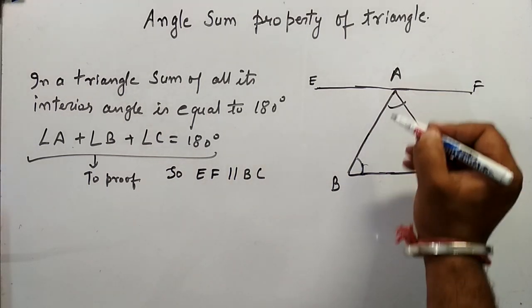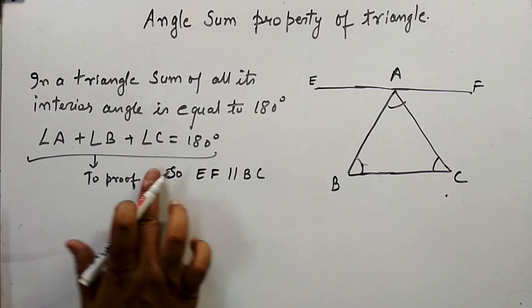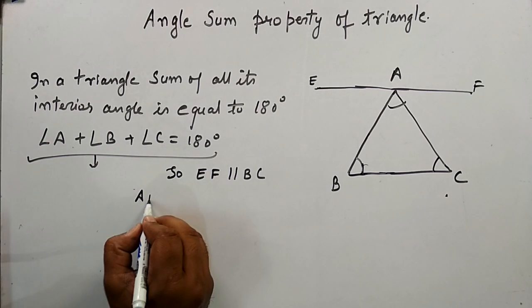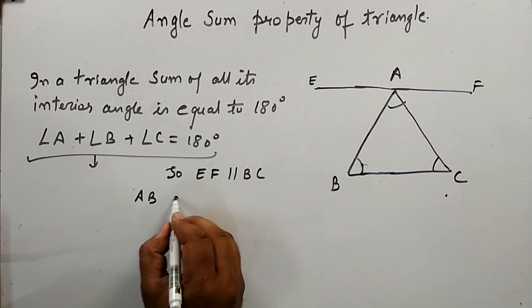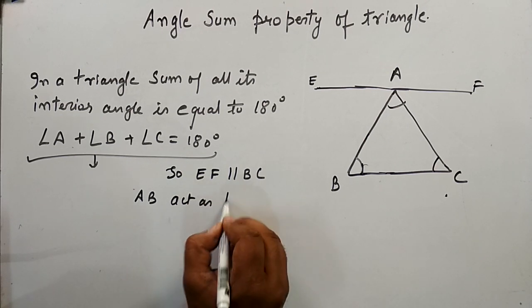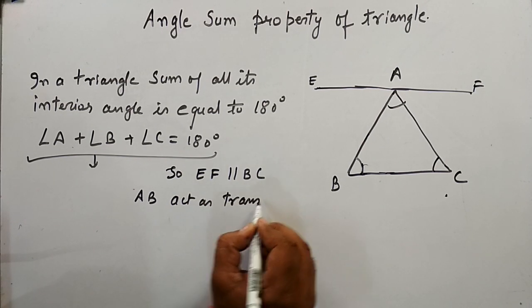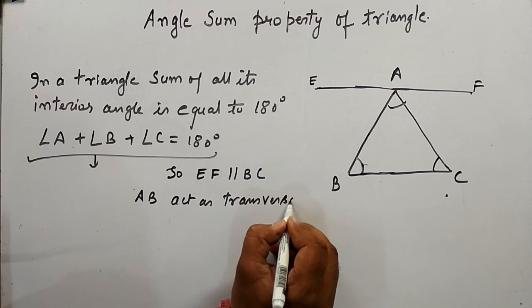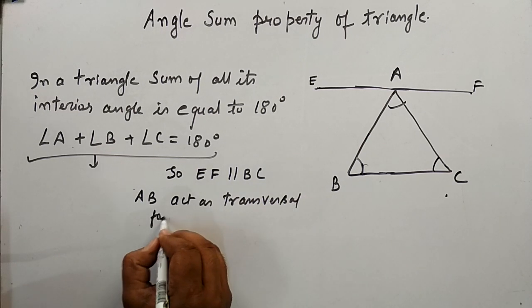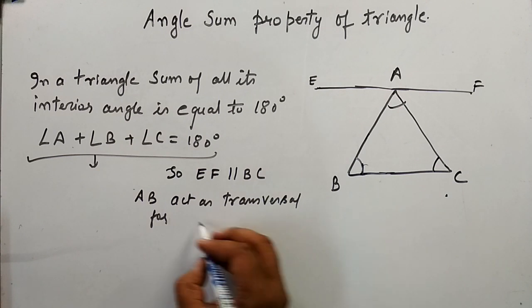And we can see here that this AB acts as a transversal for EF and BC.